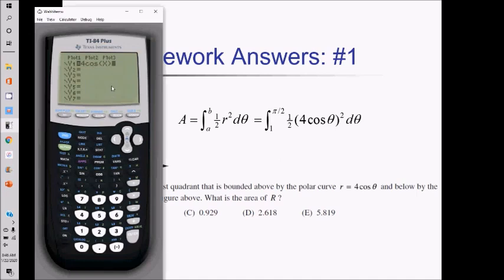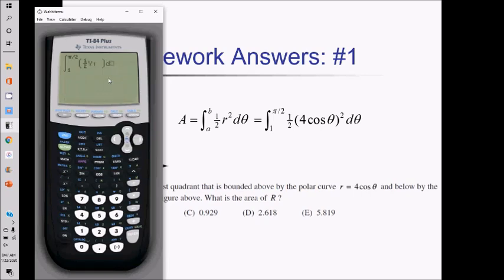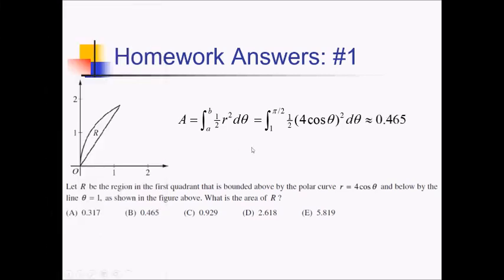First thing I'm going to do to make my life a tiny bit easier: I'm going to put my r here as my y1. So going to math 9, I need an integral. We're going from 1 to pi over 2, and in here I've got fancy fraction 1 half, and then we're going to use alpha trace y1 — because that's where I stored the r — so y1 squared. That comes out to about 0.465, which gives us choice B.